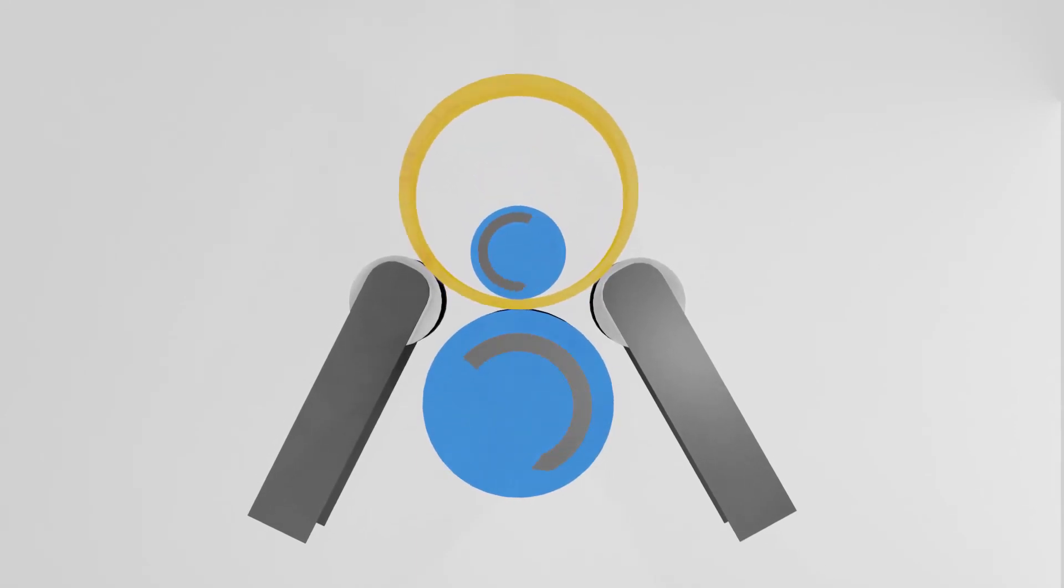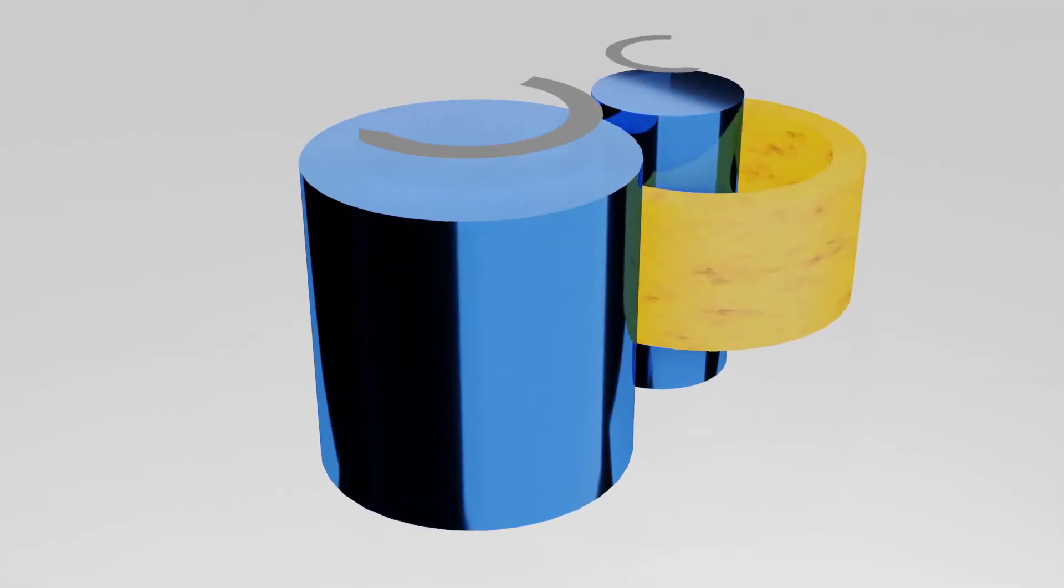When the pressure roll or mandrel rotates, it moves towards the driving roll, which causes compression of the ring as shown in the animation.